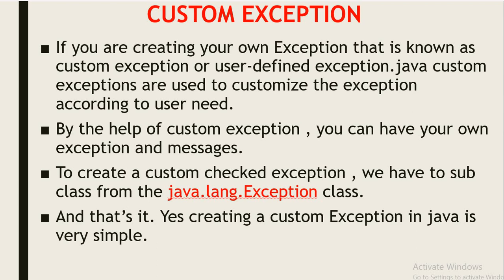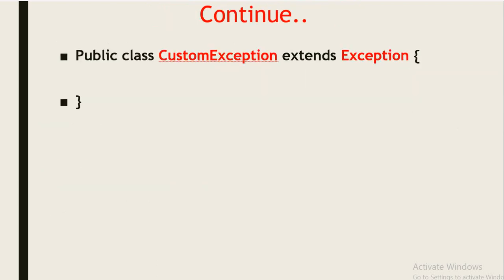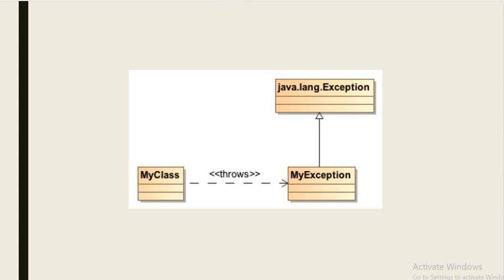To create a custom checked exception, we have to subclass from the java.lang.Exception class. It's very easy to create a custom exception in Java. We need to create our own class and extend that class using the Exception class. Then we can say it is a checked exception from the java.lang.Exception package.